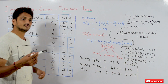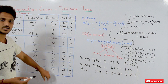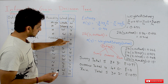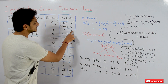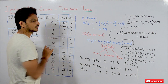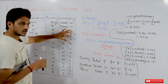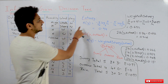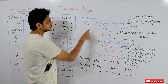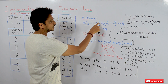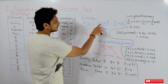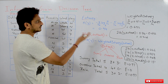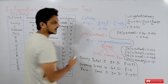Coming to how to calculate information gain — this is our data set. In this data set, we have 5 negative points and 9 positive points. Positive points means S means play tennis, N means they don't play tennis — negative points. In our last class, we discussed how to calculate entropy for this data set. H of y = −(9/14) log(9/14) base 2 − (5/14) log(5/14) base 2. If you calculate it, the entropy value is 0.94.